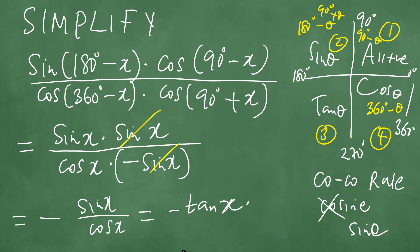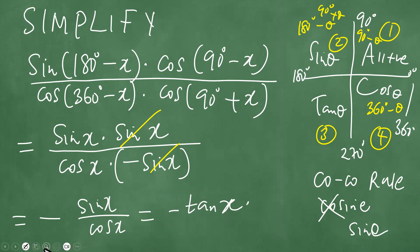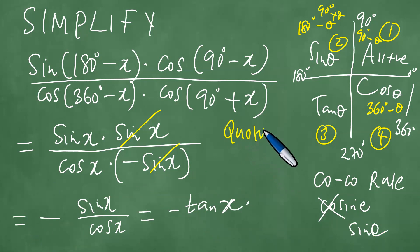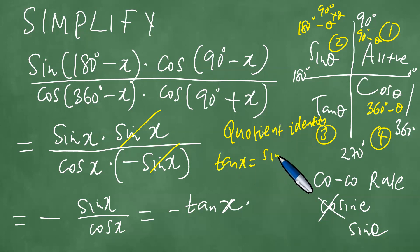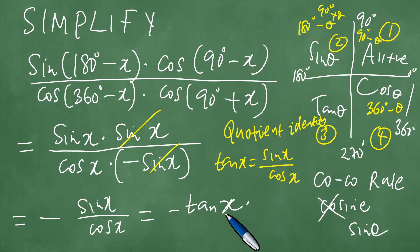We get the tangent because sine over cosine is always tangent — it's called the quotient identity. The quotient identity states that tangent of x equals sine x over cosine x.